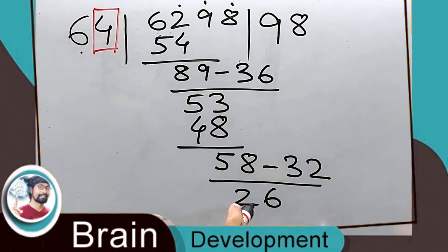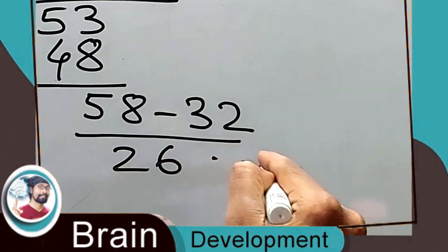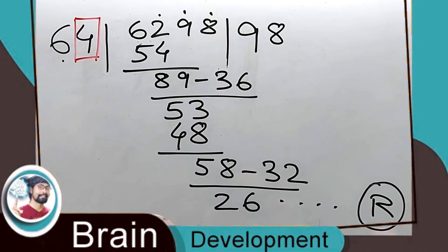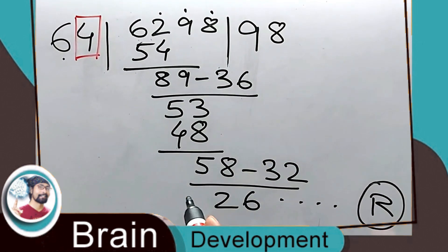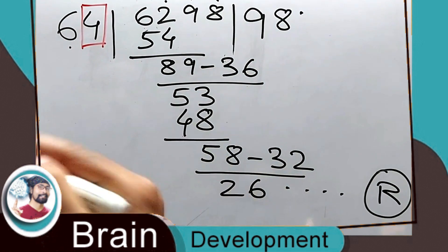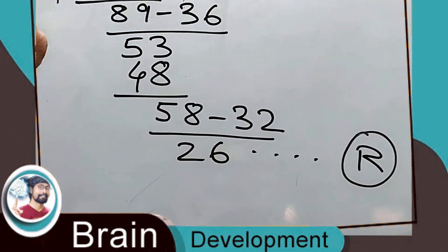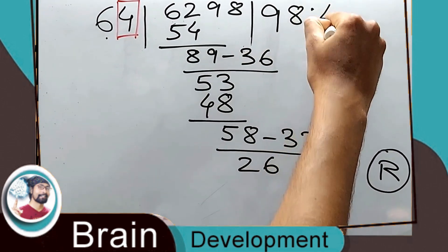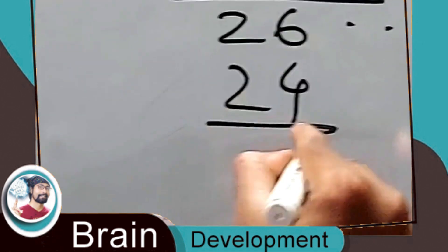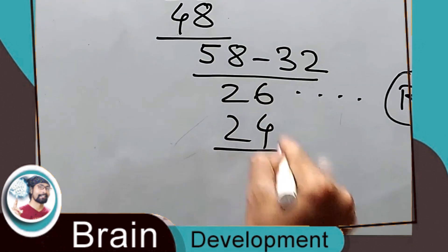Always remember: whenever you get a number lesser than the divisor, that is the remainder. Now if you want decimal values, just put a decimal point and continue the same process. Divide this 26 by 6 — four sixes are 24 — so only 2 remains. We can bring a zero down since we have the decimal point.